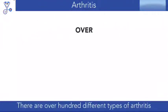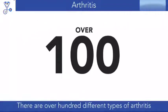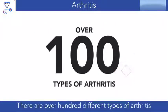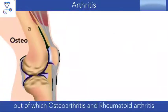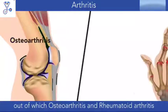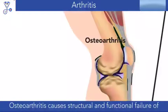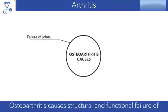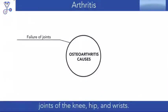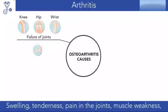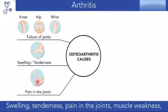There are over a hundred different types of arthritis, out of which osteoarthritis and rheumatoid arthritis are most common. Osteoarthritis causes structural and functional failure of joints of the knee, hip, and wrists, along with swelling, tenderness, and weakness in the joints.